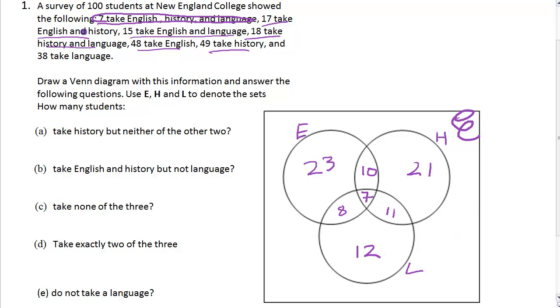Now, we have 100 altogether. Let's see how many are not doing any of these subjects. Start with the biggest number - we've got 49 taking History, so at least there's 51 to go. Take off 8, that's 43. Take off 23 is 20. Take off 12 leaves us 8 who aren't doing any subjects. So how many take History